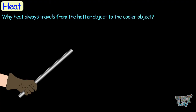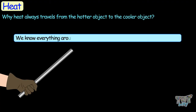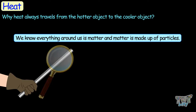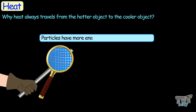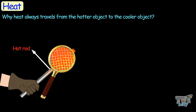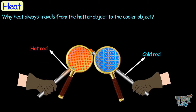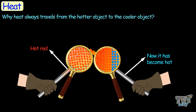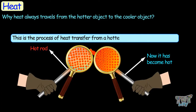Now let's learn why heat always travels from the hotter object to the cooler object. We know everything around us is matter, and matter is made up of particles, and particles have more energy at higher temperatures. So particles of hotter objects collide with slower moving particles of adjacent materials with cooler temperatures, and in this way they transfer some of their energy to the slower moving particles, and the process continues until all the particles are moving at the same rate.